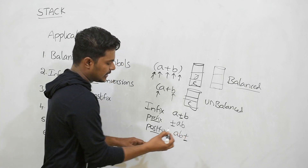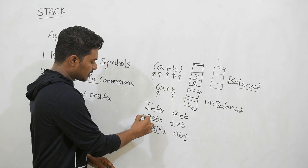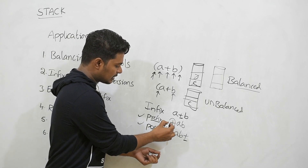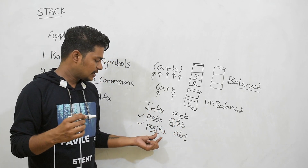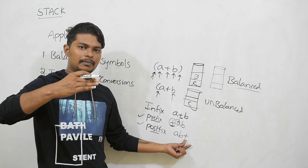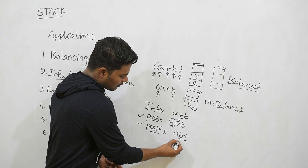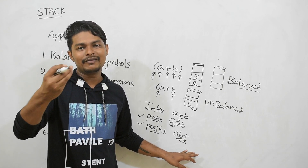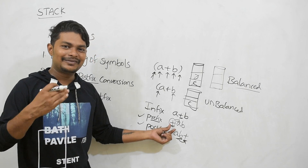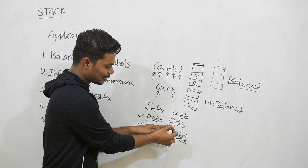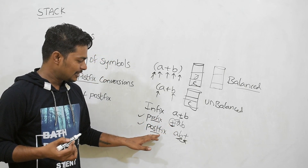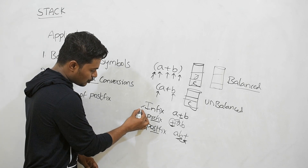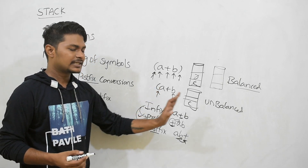A way to remember prefix and postfix: in a prepaid mobile like Jio, you first recharge and then use the facilities — similarly in prefix, the operator comes first. In postfix, like a postpaid bill, you use the service for a month and pay at the end. We use a stack data structure for infix to postfix conversion.